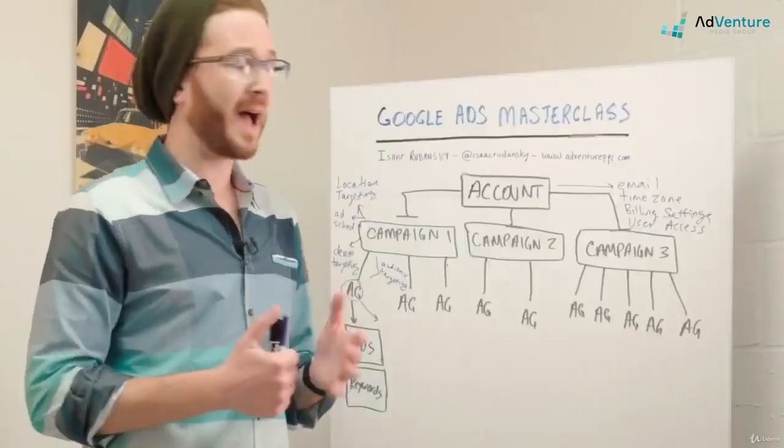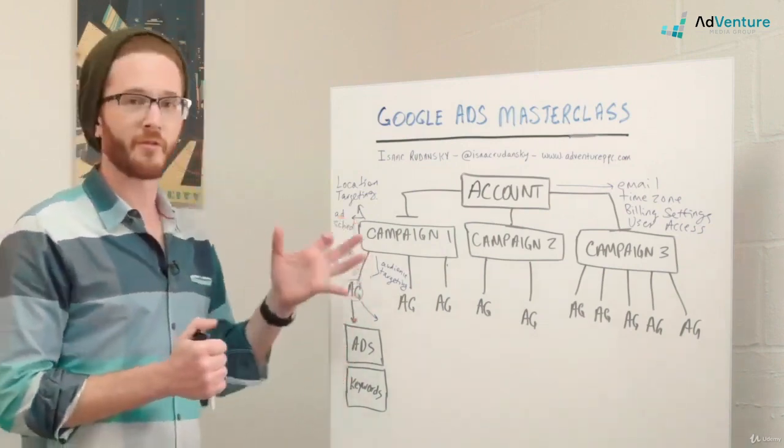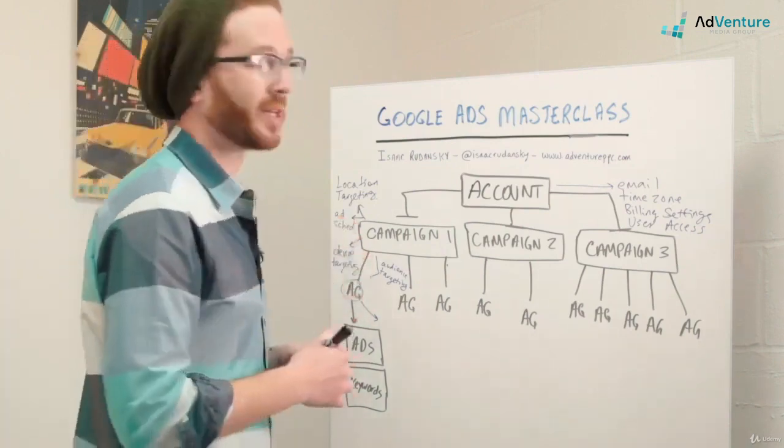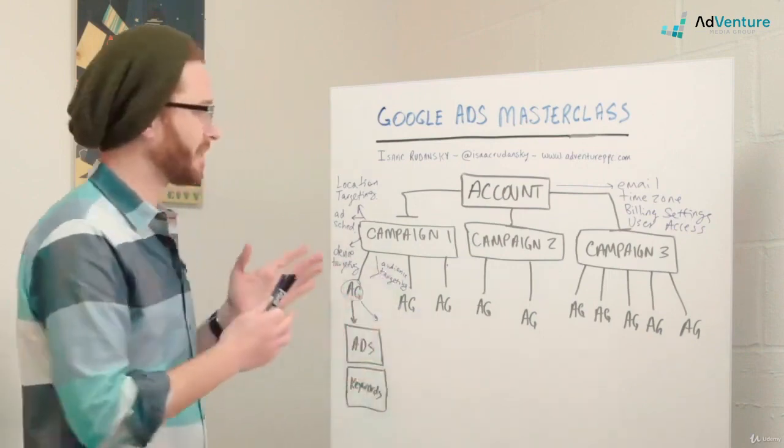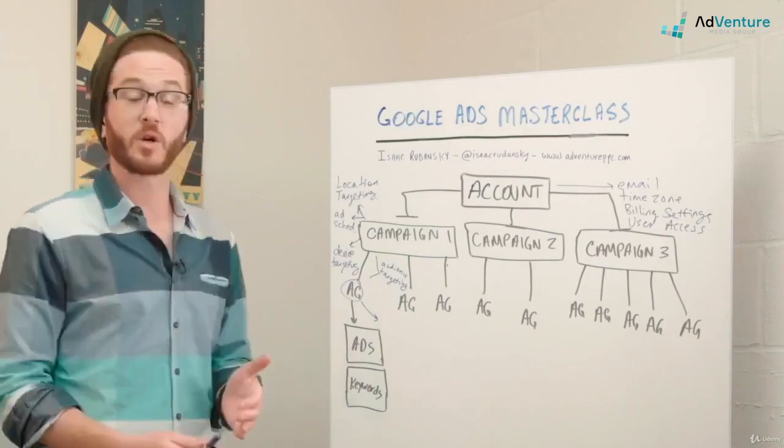The main thing to understand is that you have this hierarchy and a couple of the big settings that are available at the campaign level like location, ad scheduling, and that ad groups are contained inside campaigns. Inside ad groups are your ads and your keywords.